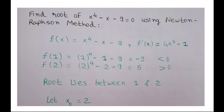Find the root of x raised to 4 minus x minus 9 is equal to 0 using the Newton-Raphson method. Here f of x is equal to x raised to 4 minus x minus 9, and f dash of x is equal to 4x cube minus 1. Now f of 1 comes out to be minus 9 and f of 2 is equal to 5, so f of 1 is less than 0 and f of 2 is greater than 0, which means the root will lie between 1 and 2.